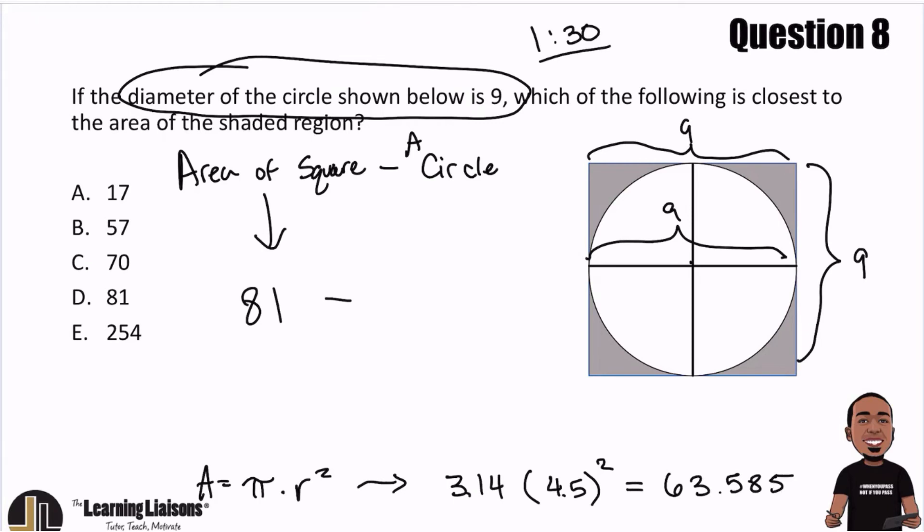Then from there, we're going to go ahead and subtract that from 81. Giving us, let me go ahead and just write that out real quick. So 63.585. And then that's going to give us 17.415.